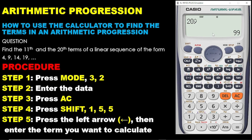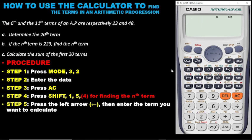This is very simple with the Casio 991ES calculator. We have another question: using the calculator to find the nth term and other terms in a sequence. The question states: the 6th and the 11th terms of an AP — arithmetic progression — are respectively 23 and 48. Part A: determine the 20th term. Part B: if the nth term is 223, find the nth term. Part C: calculate the sum of the first 20 terms.